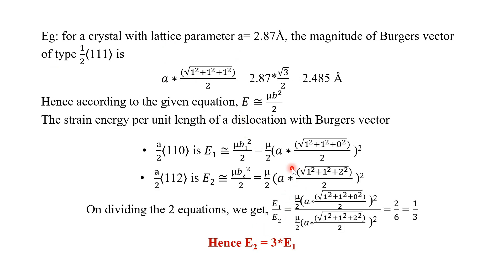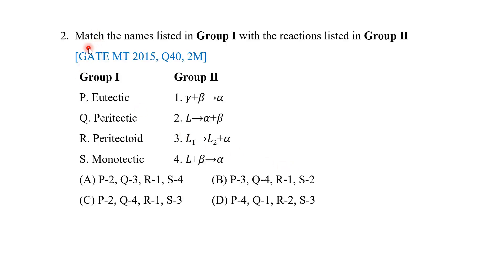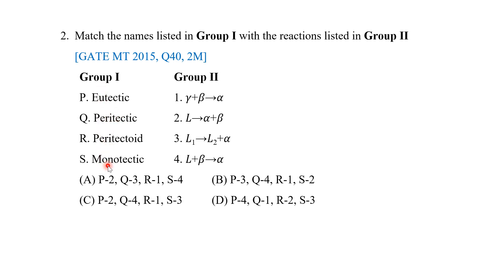You might be asked to compare between different materials or different crystal types of the same material, so μ and a values may or may not differ and the ratio can entirely change. On that note, let us go to the next question: match the names listed in Group 1 with the reactions listed in Group 2. We have eutectic, peritectic, peritectoid, monotectic, and a set of equations. L is the liquid phase; α, β, and γ are solid phases.